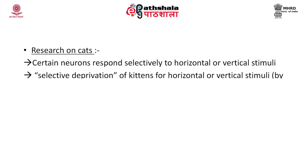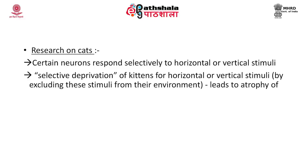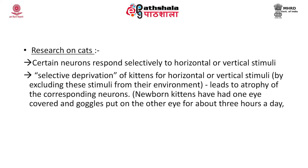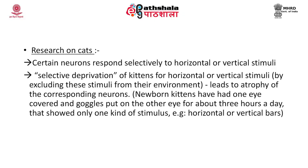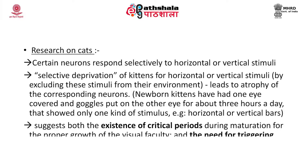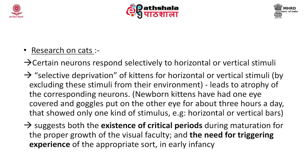Research on cats proved that certain neurons respond selectively to horizontal or vertical stimuli. Selective deprivation was done on kittens by excluding these stimuli from their environment, which led to atrophy of the corresponding neurons. For example, newborn kittens had one eye covered and goggles on the other for about 3 hours a day, showing them only horizontal or vertical bars. This suggests there exists a critical period during the maturation of an organism required for proper growth of the vision faculty, and a need for triggering experience of the appropriate sort.